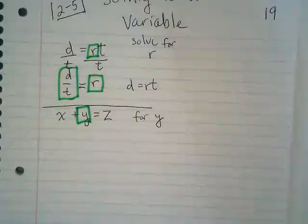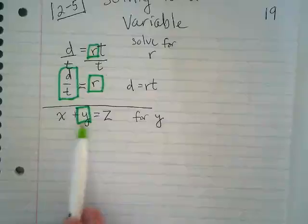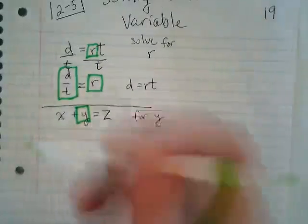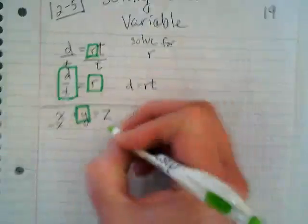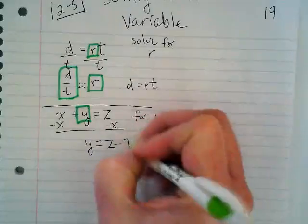We're going to subtract what? Because we're looking at the side of the equal sign where our target is and what's with it, a positive X. If I subtract that X from both sides, I get Y equals Z minus X.